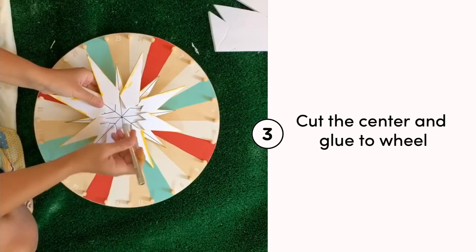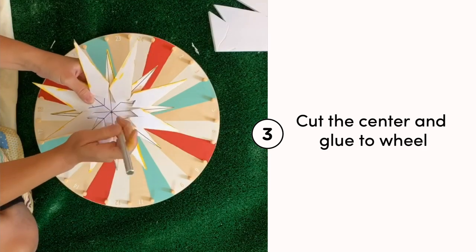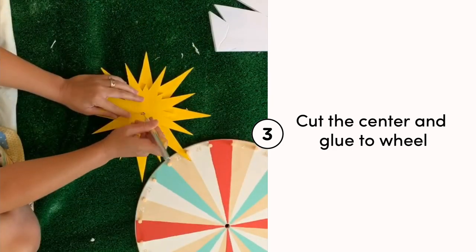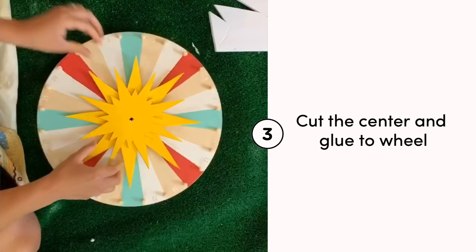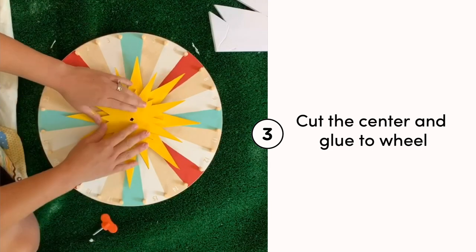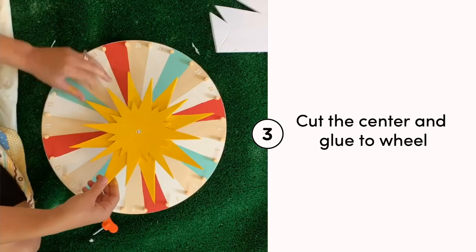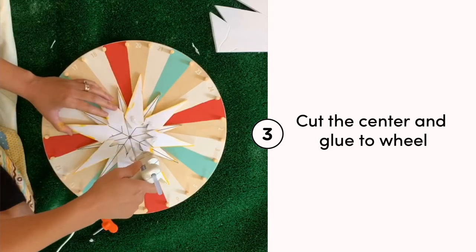I decided I wanted the star to move with the wheel, so I cut a hole through the foam core so the screw can fit through the middle. Then take some dabs of hot glue to fix the star in the position you want on the wheel.